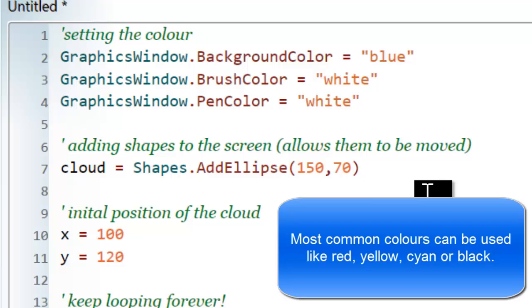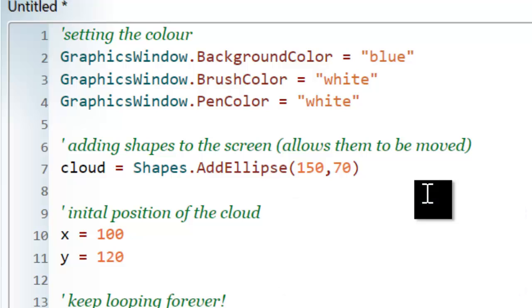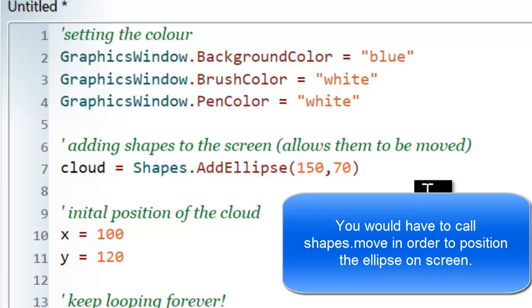The cloud is just an ellipse. To create an ellipse and add it to the page, I use the command Shapes.AddEllipse. The two items in brackets are the size of the ellipse, not its position on the screen. I assign this to a variable because that allows me to change where it is on the screen later on. Whenever you use Shapes to add whatever, you'd always do an assignment as well.